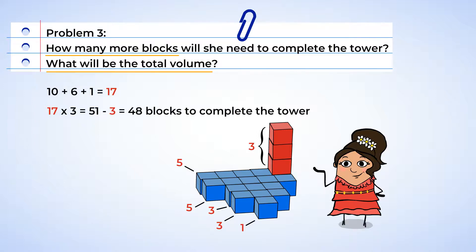Since she needs 48 more blocks to complete her tower, we can add 48 and 20 to find the total volume. The total volume of Isabella's tower will be 68 cubic inches.